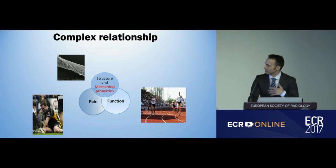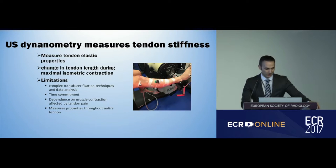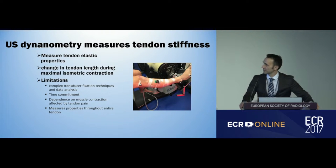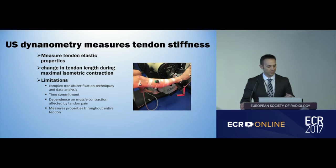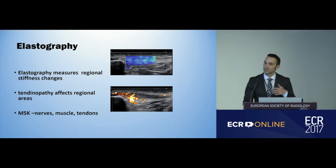We have this complex relationship between structure, mechanical properties, function, and pain. Shear wave elastography is able to actually measure the mechanical properties of the tendon and might improve our outcomes. Traditionally, tendon stiffness was measured using ultrasound dynamometry, which measures tendon elastic properties by looking at change in tendon length during maximal isometric contraction. But this technique has many limitations — it's very complex, with transducer fixation issues, data analysis, and time commitments, and it's dependent on muscle contraction, which is affected by pain. It also measures properties throughout the entire tendon, whereas tendinopathy involves regional pathological changes.